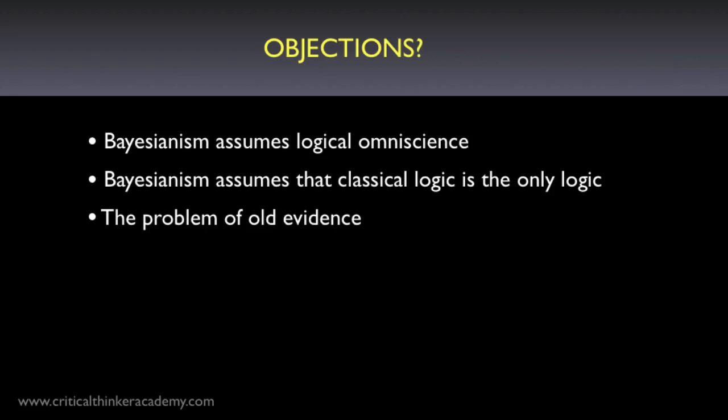Third objection: the problem of old evidence. From Bayes' rule, it follows that if the probability of a piece of evidence is one, then the likelihood of the evidence given some hypothesis is also one — and such evidence can never raise the probability of a hypothesis; the posterior probability will always equal the prior probability. This poses a problem for Bayesian views on how old evidence might support a new scientific theory. For example, Newton's theory of gravity doesn't completely predict the orbit of Mercury — it doesn't adequately account for the precession of Mercury's orbit around the Sun, which was known in the mid-19th century. Sixty years later, Einstein comes up with the general theory of relativity, and his new theory accurately predicts this piece of old evidence. This is rightly viewed as an empirical success of Einstein's theory, but the Bayesian has a hard time explaining how this old evidence can give us additional reason to believe the theory.